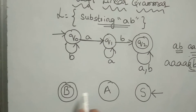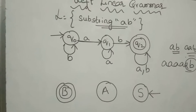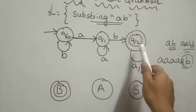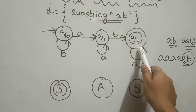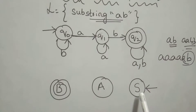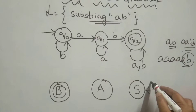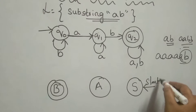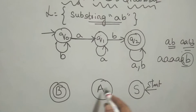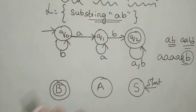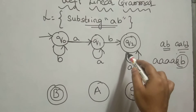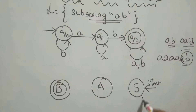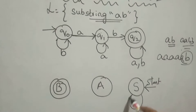How many states are there? The final state is there. You can make it as the start state. The start state is the final state. After this, the arrow mark directions are reversed.